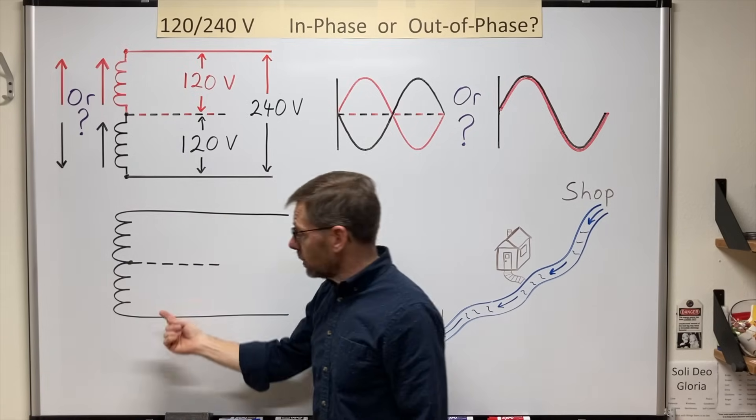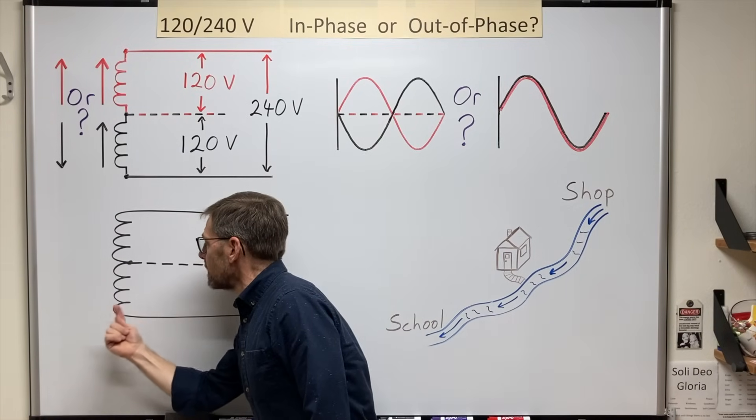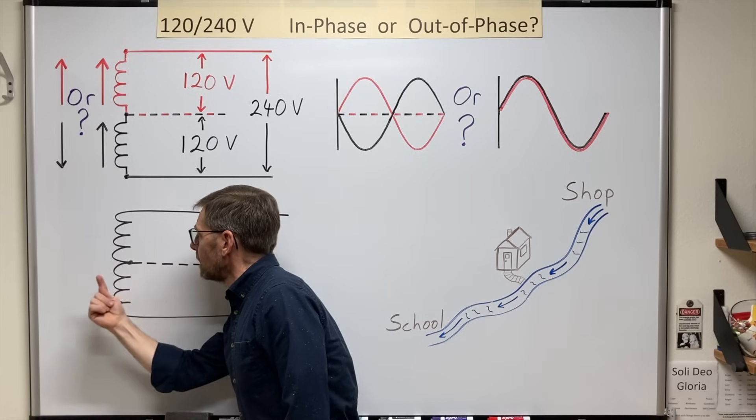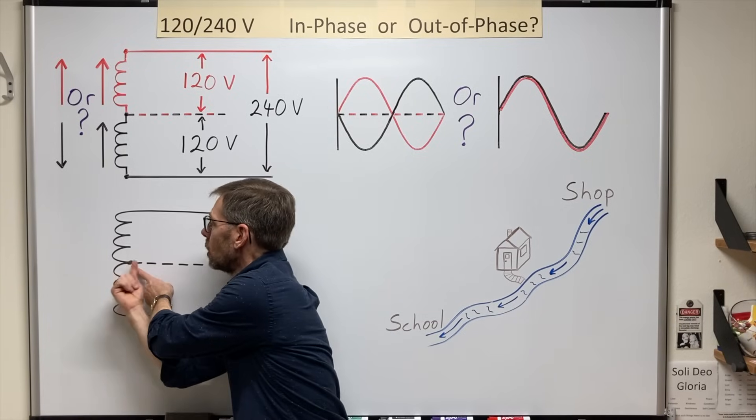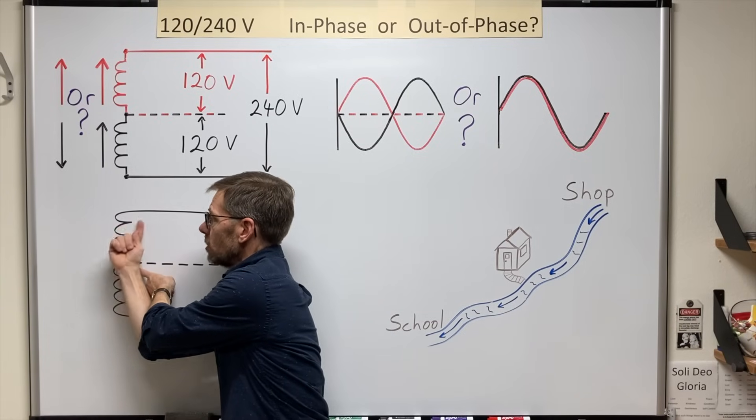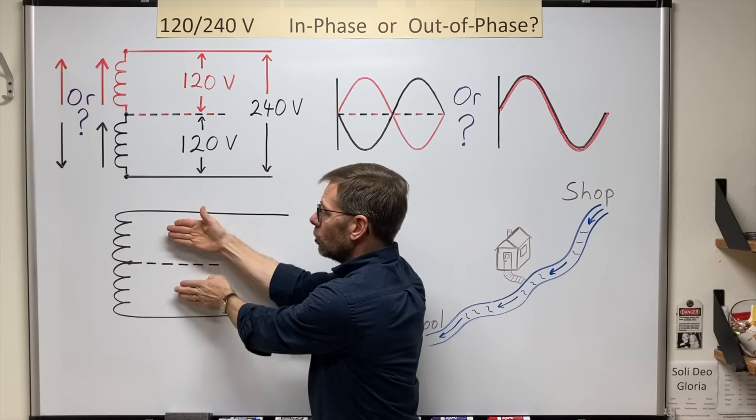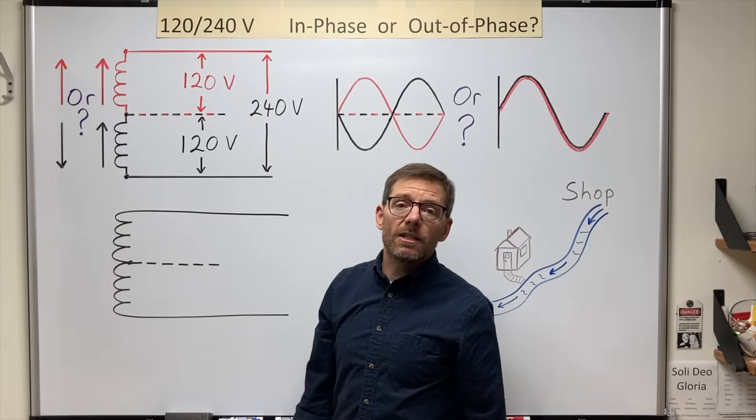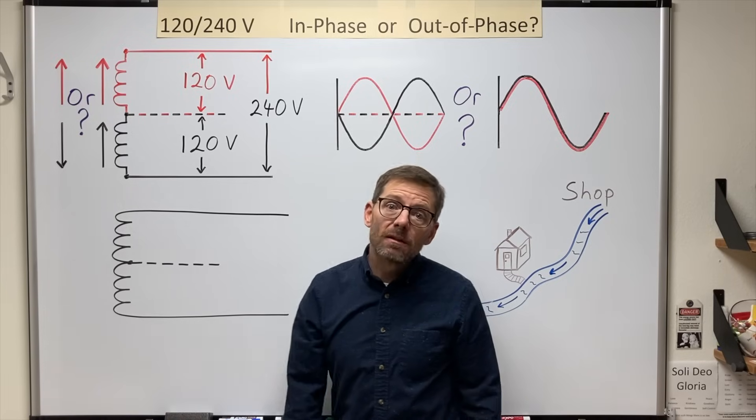But if when they manufacture it, they turn them this direction on the lower half, and then at the center point, reverse the direction of the turns, you would end up with two halves that are 180 degrees out of phase from each other.